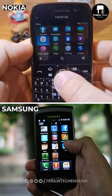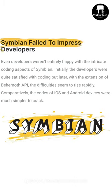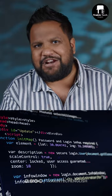Symbian was an open-sourced operating system backed by Nokia and Samsung. The reason why Symbian failed and didn't catch on is because developers found it complex to code their apps on this platform. Making apps for Android and iOS was much easier.